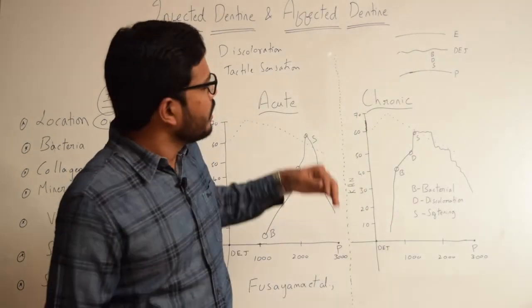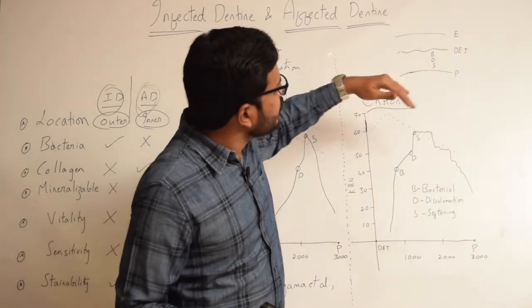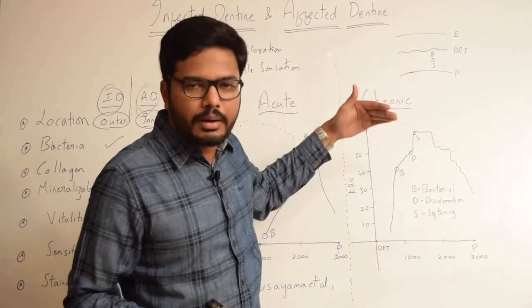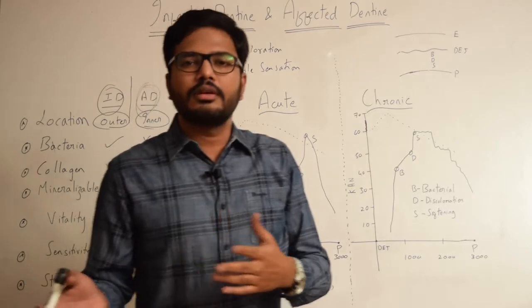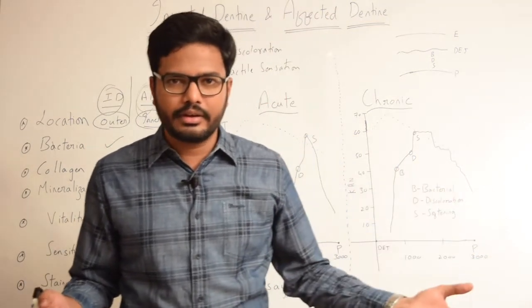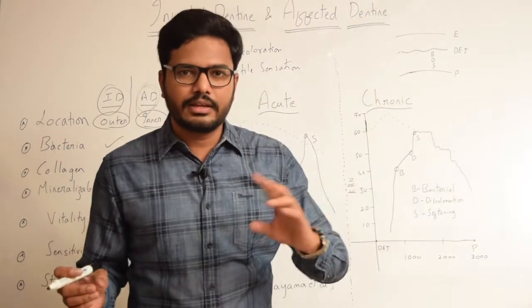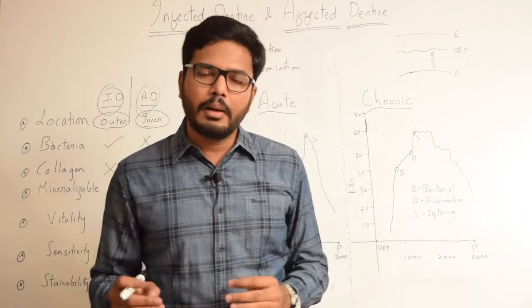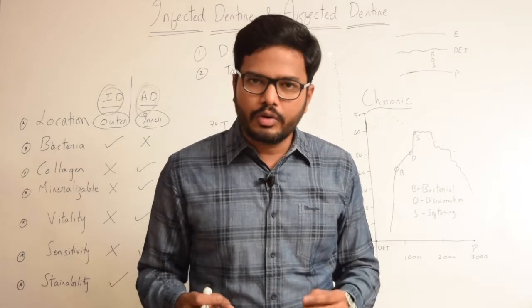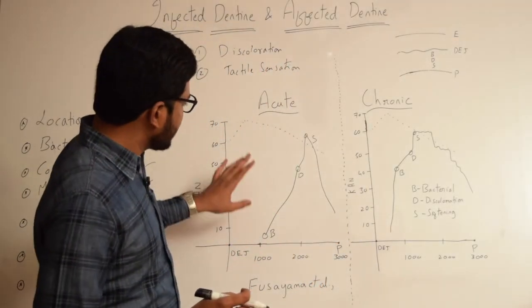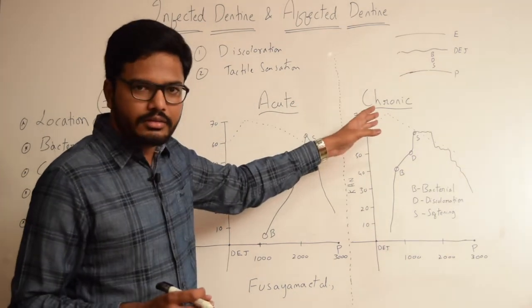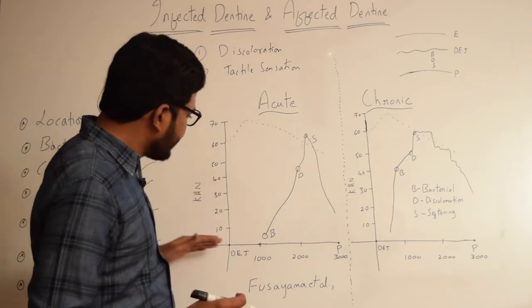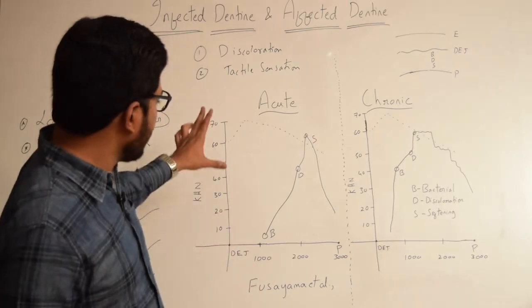If you notice, the bacterial front is more towards the external surface or towards the enamel, whereas the softening front is more towards the pulpal side. As the names indicate, bacterial front means there are plenty of bacteria in that zone, discoloration front indicates discoloration, and softening front indicates that the dentin there is softer compared to normal dentin. These graphs compare acute and chronic caries with regard to the distance between different fronts, hardness, and depth of penetration.